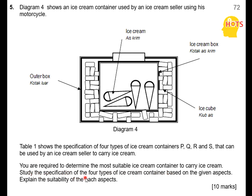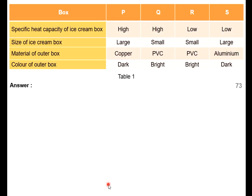You are required to determine the most suitable ice cream container to carry the ice cream. Study the specifications of the 4 types based on the given aspects and explain the suitability of each aspect. This is a 10-mark question. The specifications are: specific heat capacity of the ice cream box (high or low), size of the ice cream box (large or small), material of the outer box (copper, PVC, or aluminium), and colour of the outer box (dark or bright).